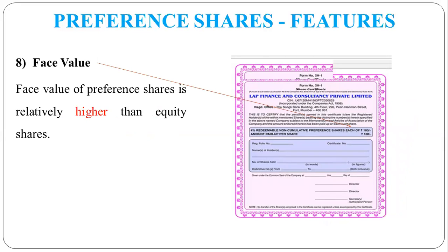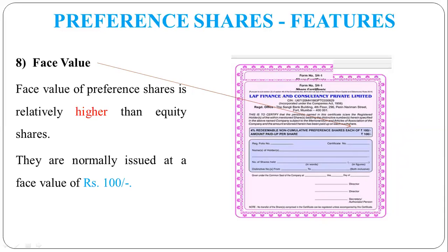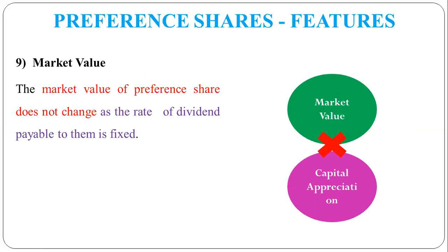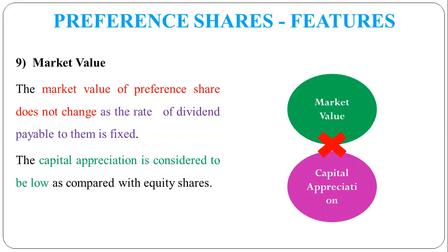The face value of preference shares is higher — it can be 100 or more — because it is a safe investment, so the price is higher and people invest in it. Compared to equity shares, the price of preference shares is higher. The market value of preference shares does not fluctuate as much as equity shares. Capital appreciation is higher for equity shares than for preference shares — so preference shares offer stability rather than growth.